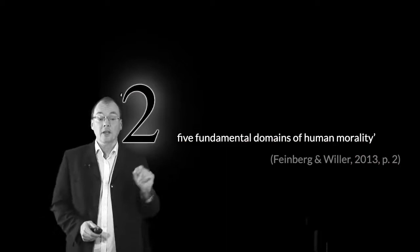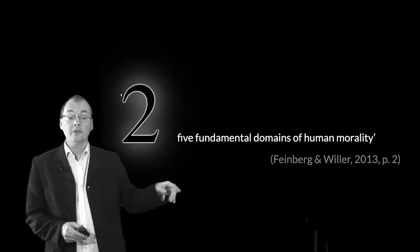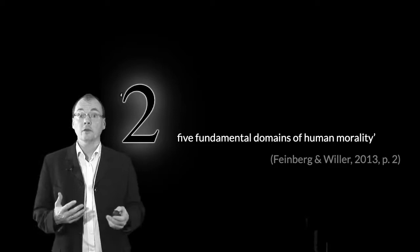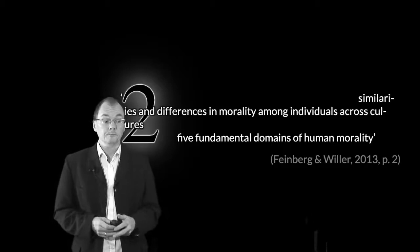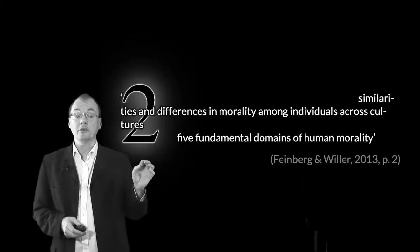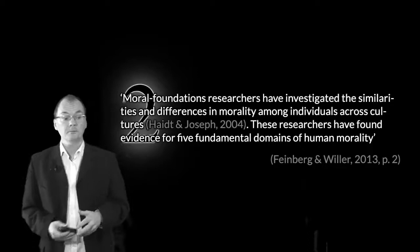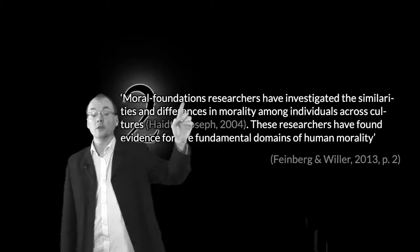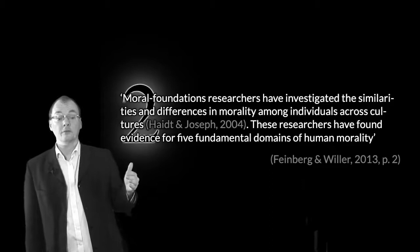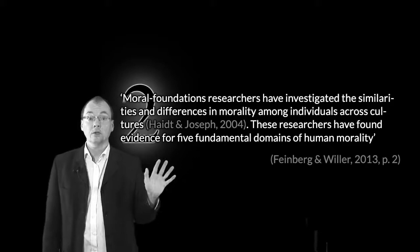Looking at this claim by Feinberg and Willer — the second of five claims — part of the claim is the idea that there are multiple, that's to say more than one, fundamental domains of human morality. We've been thinking particularly about harm and purity. The claim they want to make is about similarities and differences in morality across cultures. What they're claiming is that moral foundations researchers have investigated similarities and differences among individuals across cultures and found evidence for these fundamental domains of human morality.